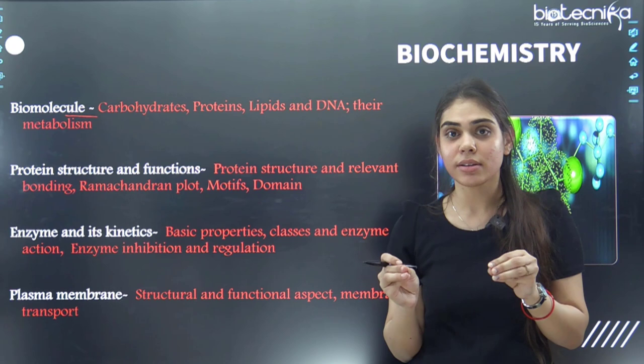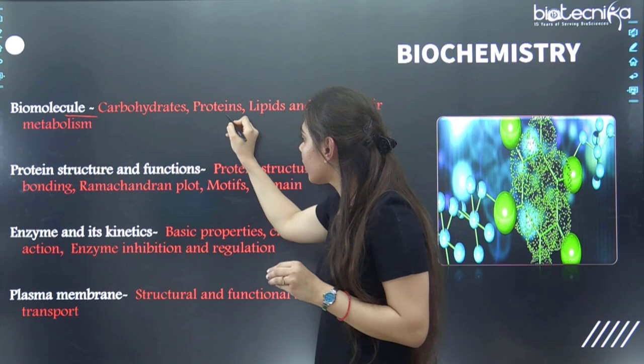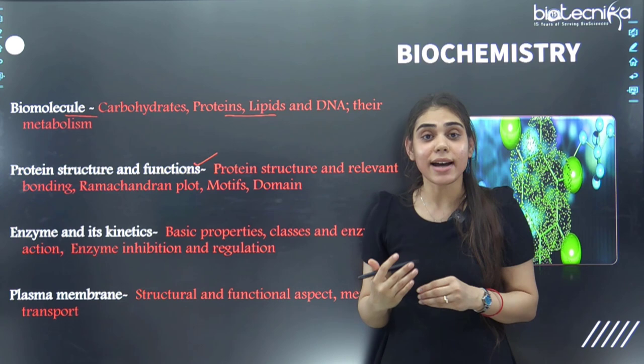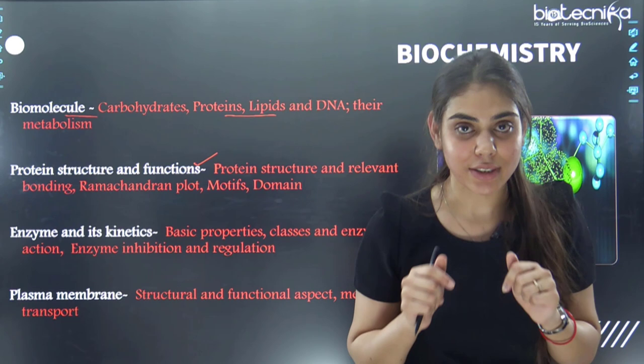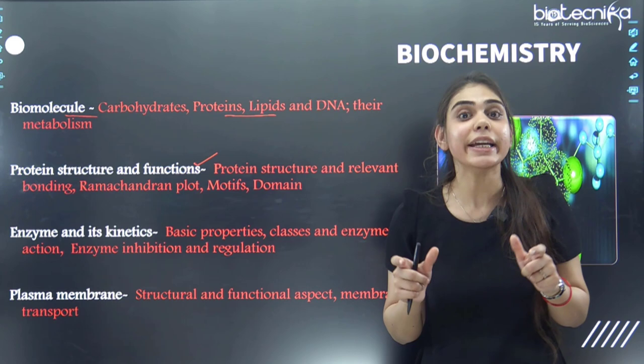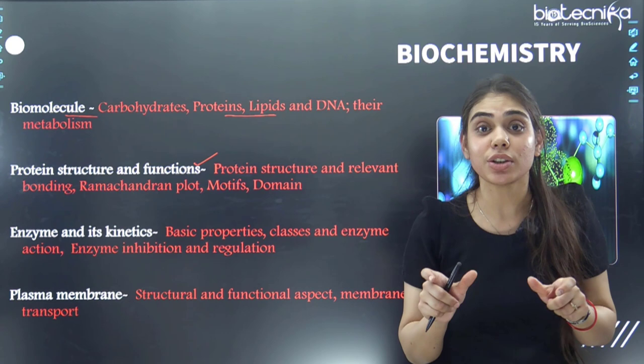Next, we have protein structures and functions. You mainly need to study the Ramachandran plot, the four different kinds of protein structures, what bonding is involved in these structures, and sometimes they ask for the definitions of motifs and domains. The difference between motif and domain should be clear to you.